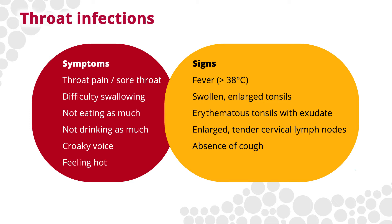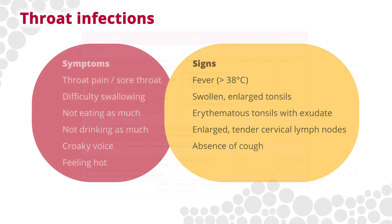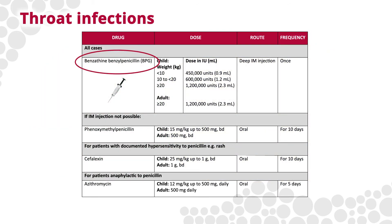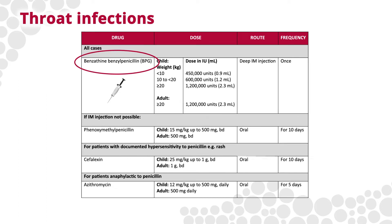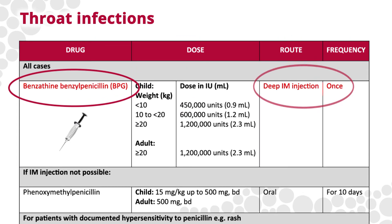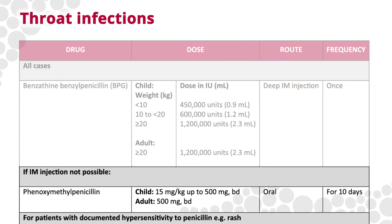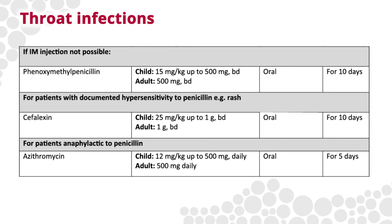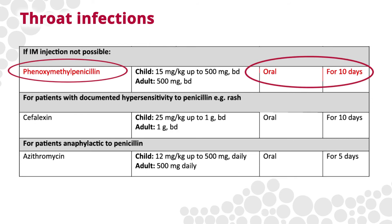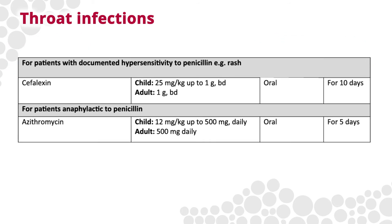Young people in high-risk categories for ARF should be treated with antibiotics before Strep A swab results are known. Penicillin is the first treatment for Strep A throat infections due to its narrow spectrum and efficacy against Strep A. One intramuscular benzathine benzylpenicillin injection is the preferred treatment, and if this is not possible, oral phenoxymethylpenicillin should be given twice a day for 10 days. Non-penicillin treatments are available for people with allergies to penicillin.